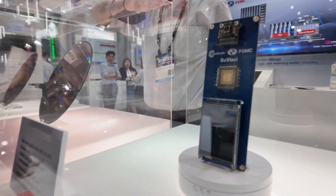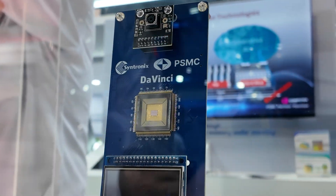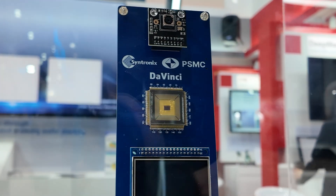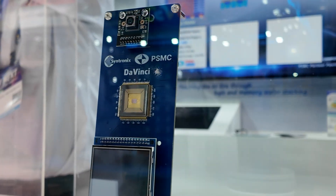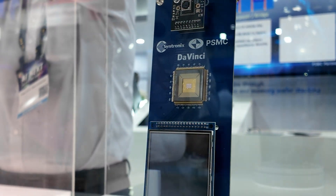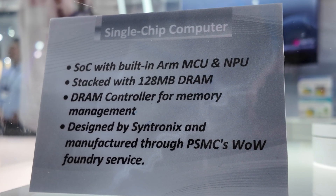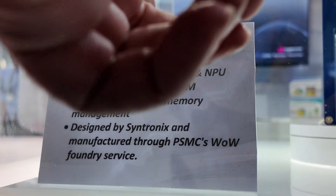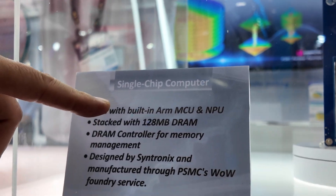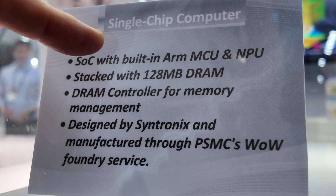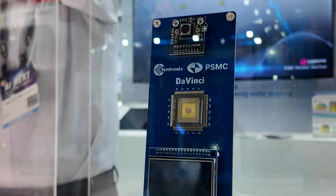This one demonstrates that as the Power Chip Group, we have many subsidiaries. Some are focused on logic design, some on DRAM design. We can do the logic wafer and also the DRAM wafer and logic design. We can bond the two kinds of wafers together to provide a single chip solution. Here we have 128 GB DRAM stacked with our CPU, providing an embedded solution.